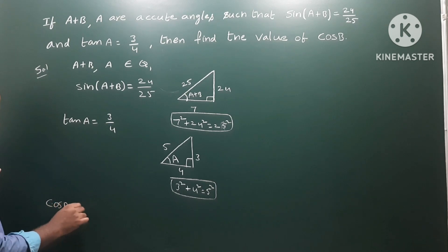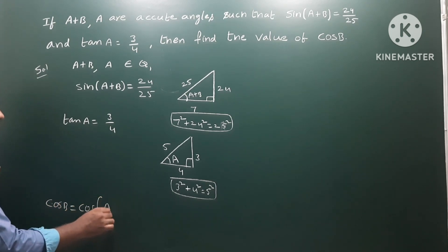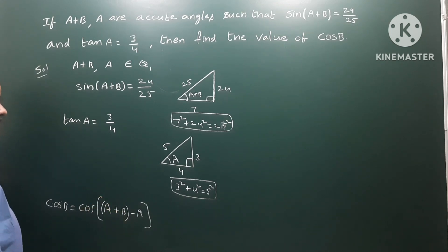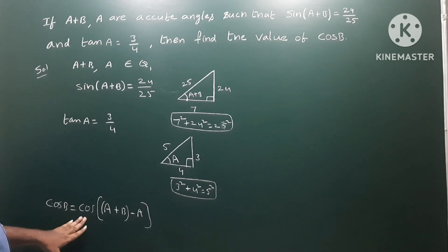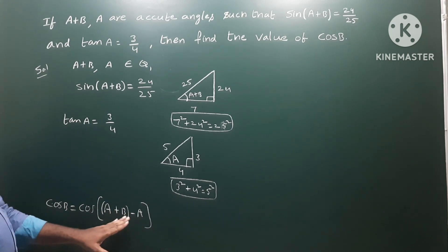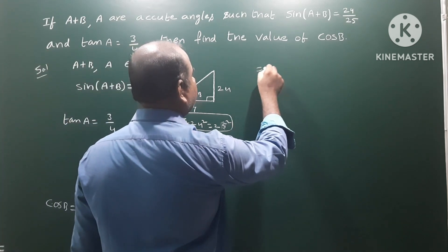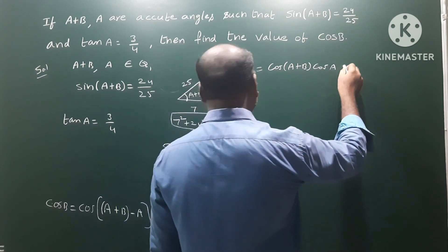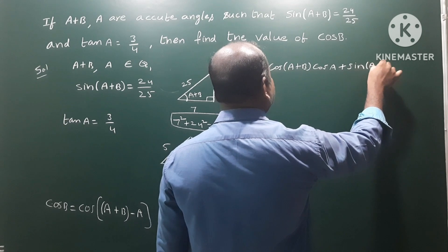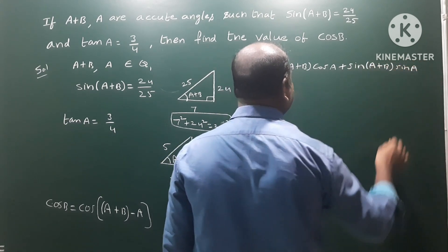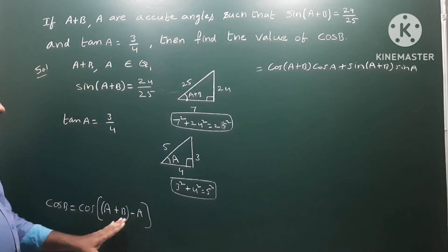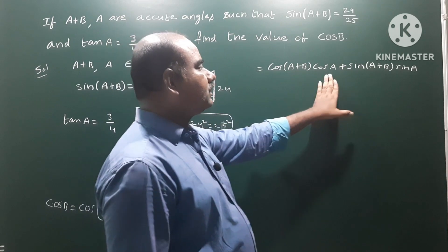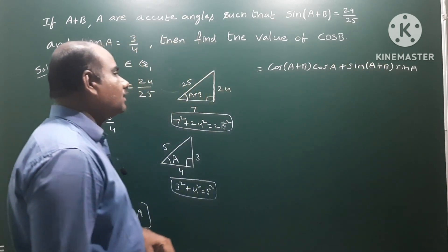We write cos(B) = cos((A+B) - A). Expanding using the formula: cos(A+B-A) = cos(A+B)·cos(A) + sin(A+B)·sin(A). This is the cos(A minus B) formula: cos(A)cos(B) + sin(A)sin(B), applied here with (A+B) and A. So we need cos(A+B), cos(A), sin(A+B), and sin(A).